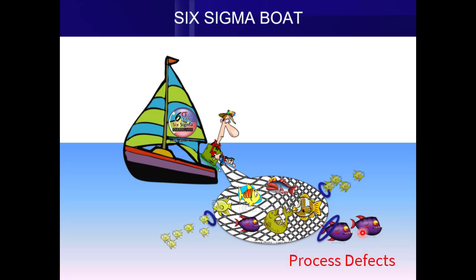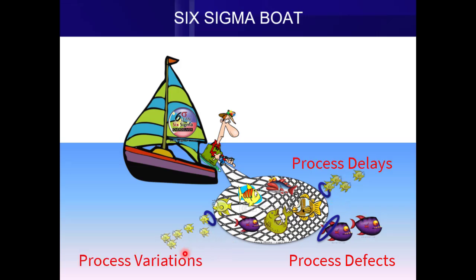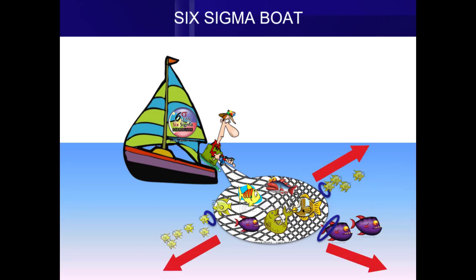Because of the Cost of Poor Quality, the business will experience three things: process defects, process delays, and process variation. Because of these three, the business will experience cash leaks — and out goes your cash.